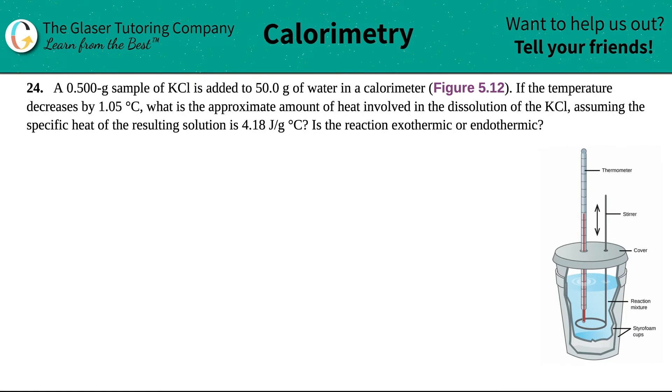Number 24. A 0.500 gram sample of potassium chloride, which is KCl, was added to 50.0 grams of water in a calorimeter that's shown in 5.12, which is this calorimeter right here.